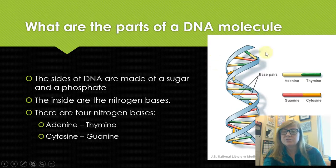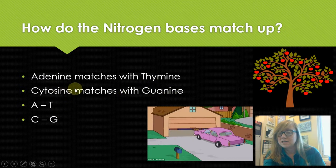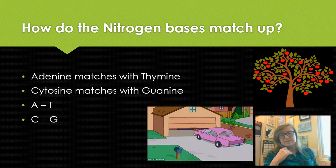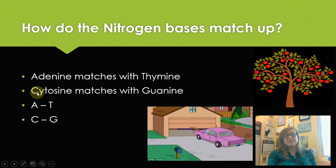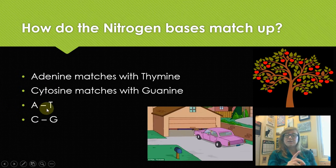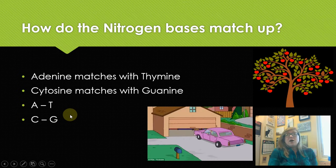These nitrogen bases only match up in a certain way: A and T match — adenine and thymine — and C and G match — cytosine and guanine. A lot of times they're just written as the letters A, T, C, G. It's easy to remember because adenine starts with A. I used to think about it this way: A and T match because they're pointy letters, and C and G match because they're round letters. I've also heard people say 'apple in the tree and car in the garage.' They always match that way.